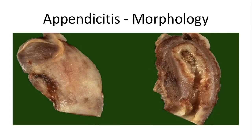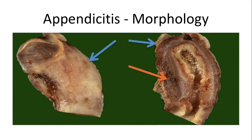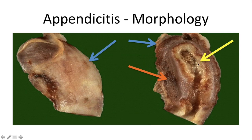The morphology of acute appendicitis reflects the changes of inflammation. Grossly, there is fibrinous exudate coating the serosal surface due to increased vascular permeability. The appendiceal wall is congested and appears darker because of vasodilation and increased vascular flow. Within the mucosal lining there is often ulceration and fibrin exudate. Overall the appendix is larger than normal due to the presence of edema.